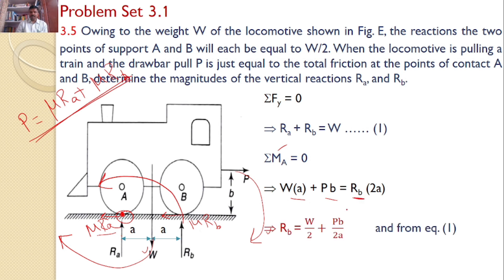Simplification, then I will get Rb is equal to WA plus Pb by 2A, or you can say it is W by 2 plus Pb by 2A. And from equation 1, I will get Rb is equal to W by 2 minus Pb by 2A. These two are the answers.